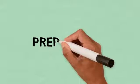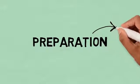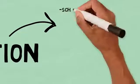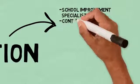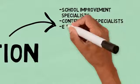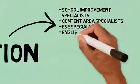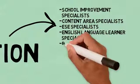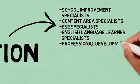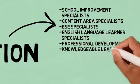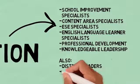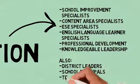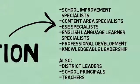Step 1 is preparation. Begin by building the team that will work through the self-study process. The team may include school improvement specialists, content area specialists, exceptional student education and English language learner specialists, those involved in professional development, as well as leadership knowledgeable in school improvement. The SEA may also wish to include representatives from local education agencies such as district leaders, school principals, or teachers. The broader the range of knowledge and skills reflected on the team, the better.